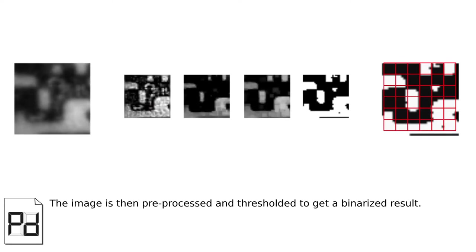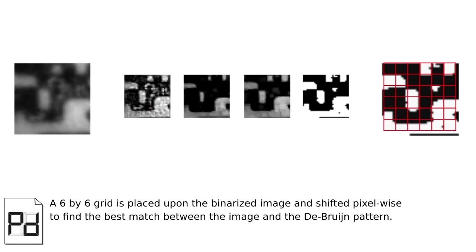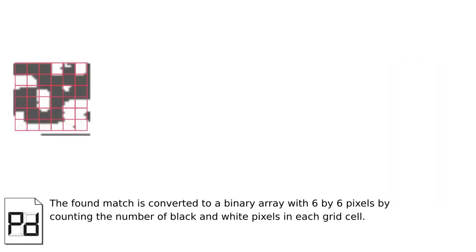The image is then pre-processed and thresholded to get the binarized result. A 6x6 grid is placed upon the binarized image and shifted pixel-wise to find the best match between the image and the De Bruijn pattern. The found match is converted to a binary array with 6x6 pixels by counting the number of black and white pixels in each grid cell.